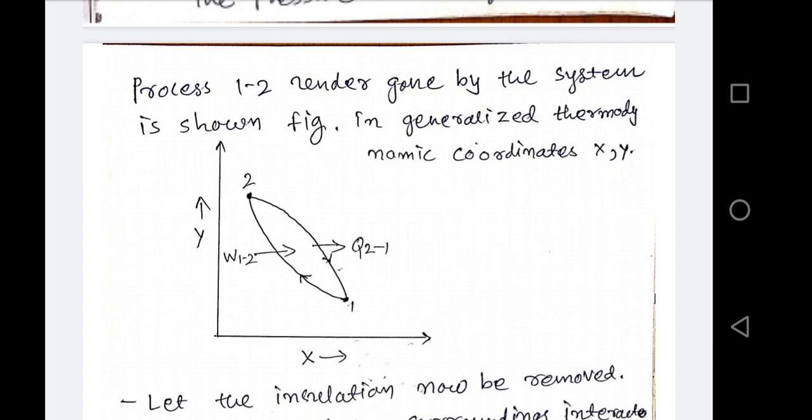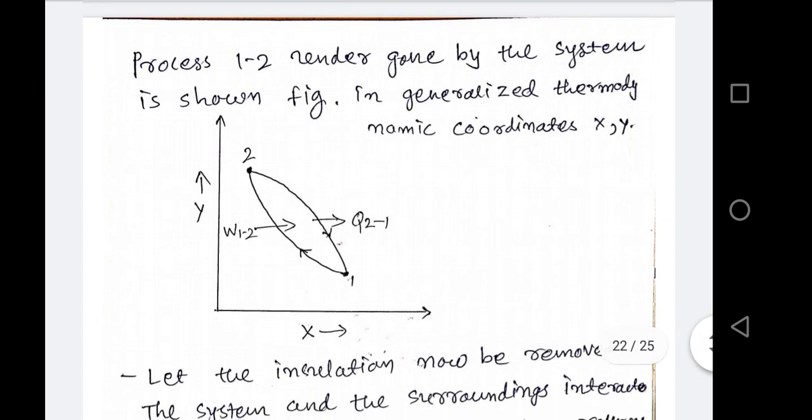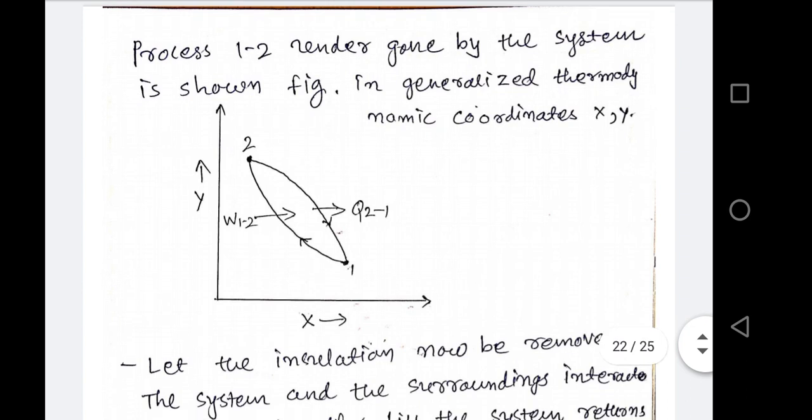When the insulation is removed, heat is rejected until the system returns to its initial condition, point 1. So the system reaches initial state through path 2→1, rejecting heat Q₂₁. The forward path (1→2) and reverse path (2→1) are different, meaning this is not a reversible process — a reversible process would require both paths to be identical. This process is cyclic.